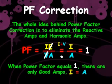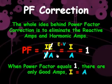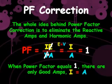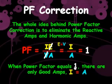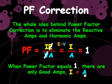The whole idea behind power factor correction is to eliminate the reactive amps and harmonic amps. In the power factor equation, the voltage E from true power and the voltage V from apparent power are always going to be equal, so we can cancel them out. What we're left with is I over A. When the power factor equals one, there are only good amps — I is going to equal A, meaning the current from true power equals the current from apparent power, with no reactive amps and no harmonic amps.